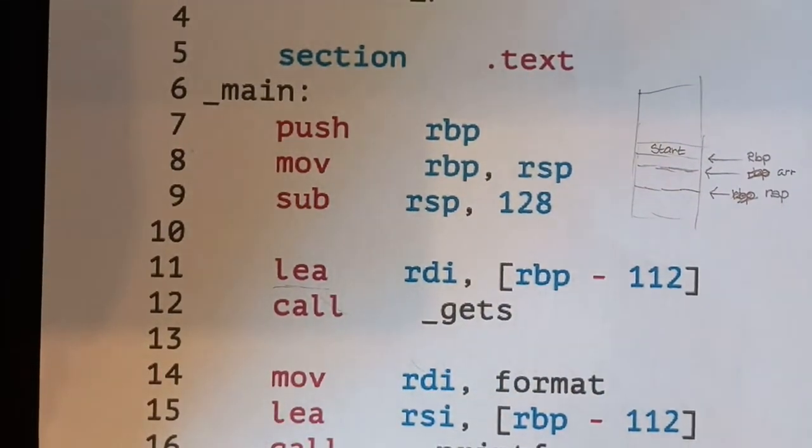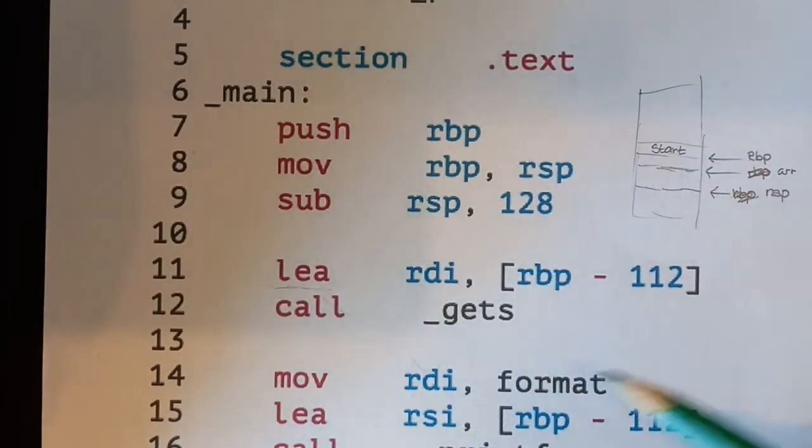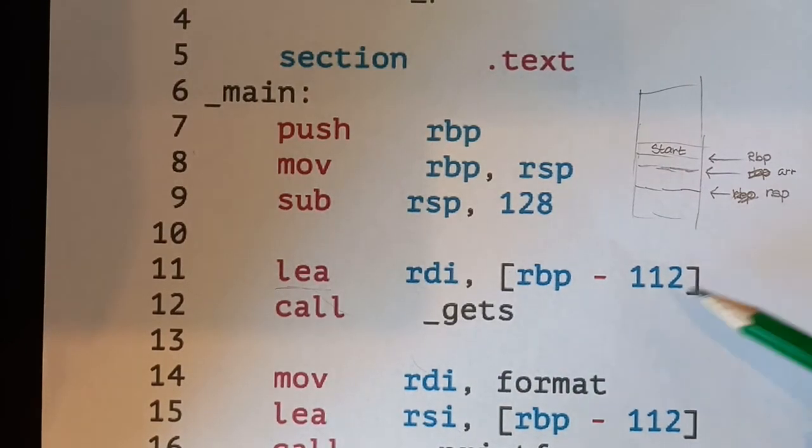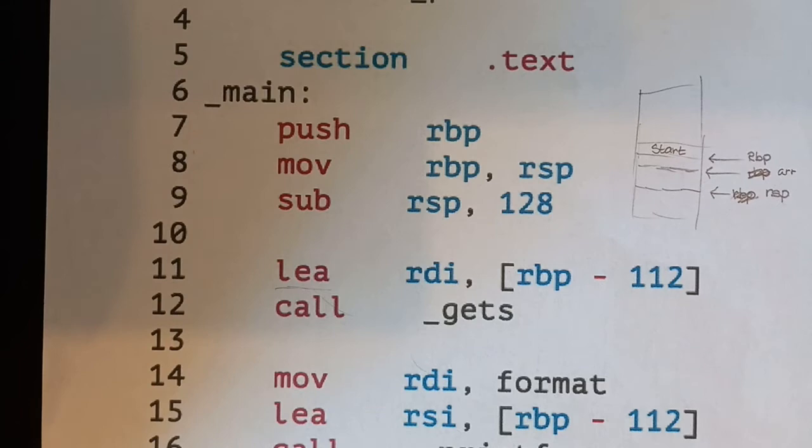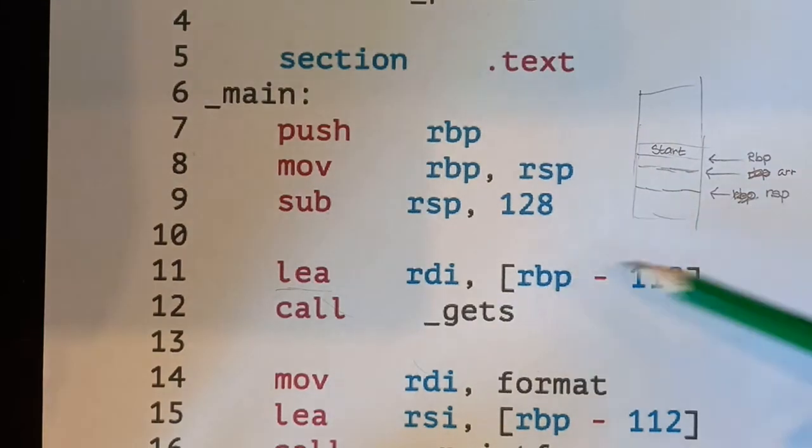So this might seem a little bit complicated. Like, why are we going through all of these steps? Can't we just say RDI equals RBP, and then sub RDI by 112. And you can, a lot of times that is the thing to do.